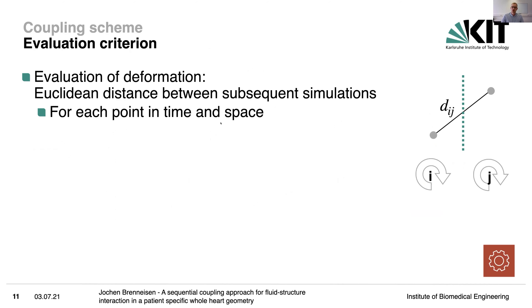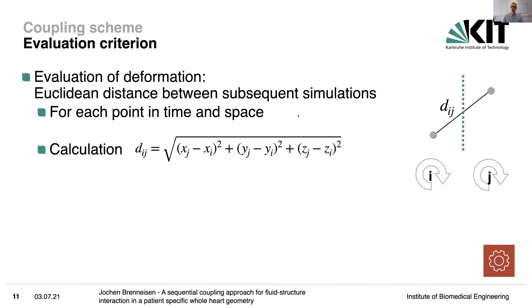To evaluate how this approach works, we examined the deformation. We introduced the Euclidean distance: if we have two iterations I and J, we compare the same point across different iterations. When we have the same point in time and space, we calculate the root mean square Euclidean distance. Also important are the quantities of interest for clinical relevance, so I will present a PV loop later.